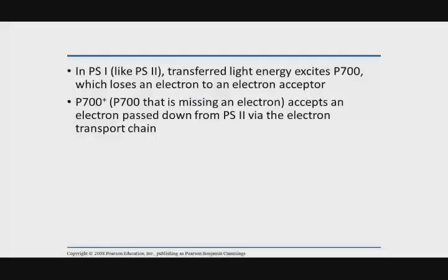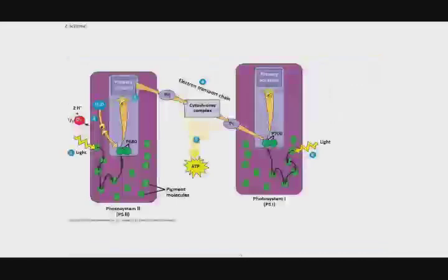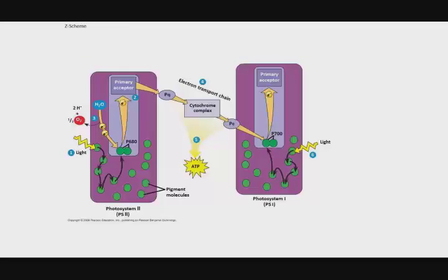Those electrons, as they move onto plastocyanin, are going to ultimately be the replacement electrons for the electrons in the special pair of photosystem I. So the P700, when they get hit with a photon of light, it's going to drive that electron up to a primary acceptor of photosystem I. And then the replacement electrons come from plastocyanin.